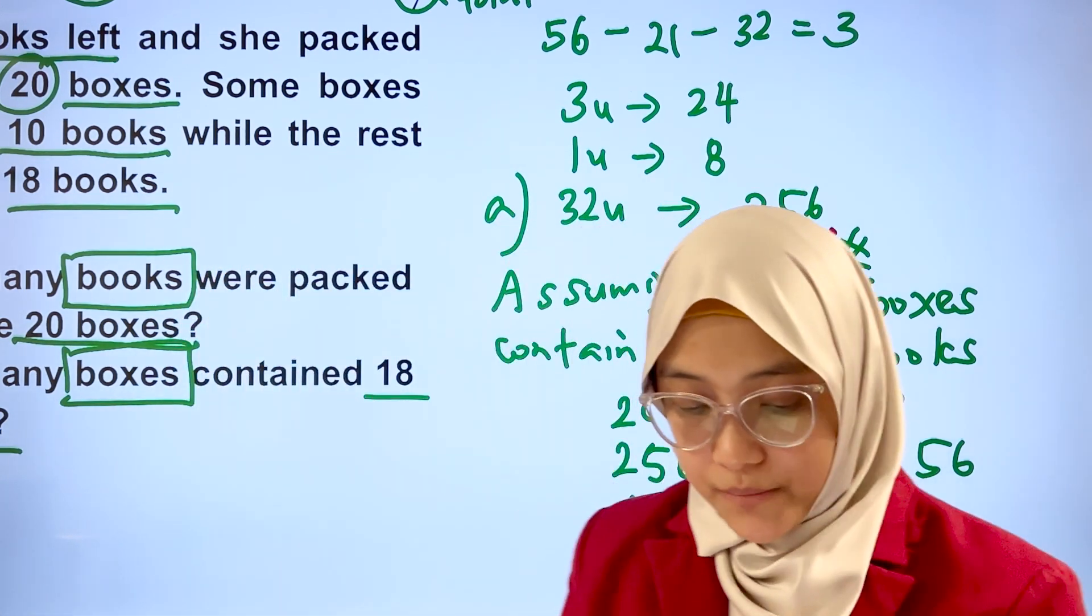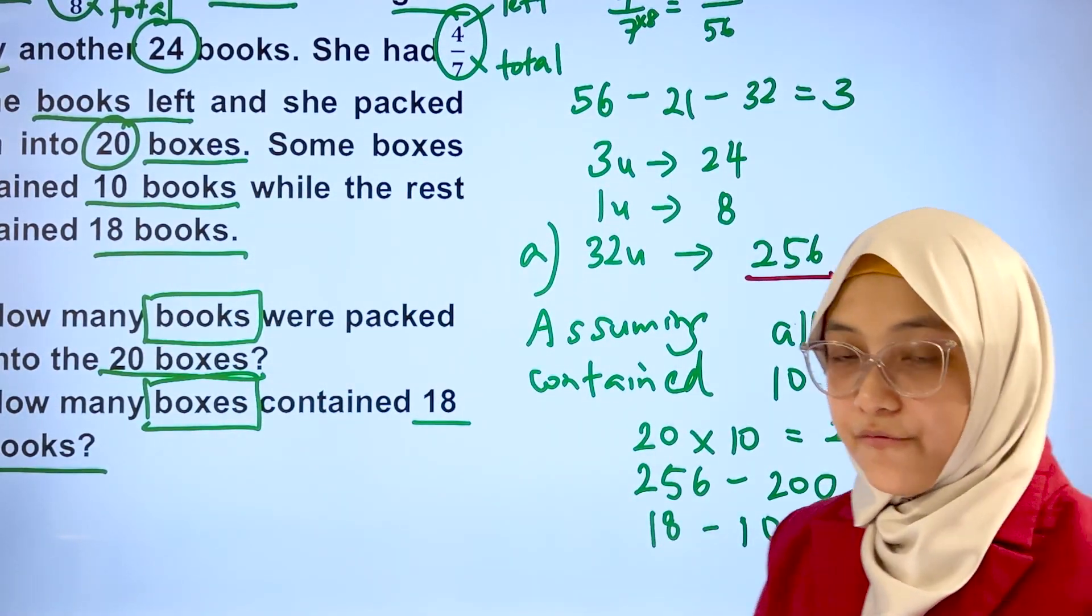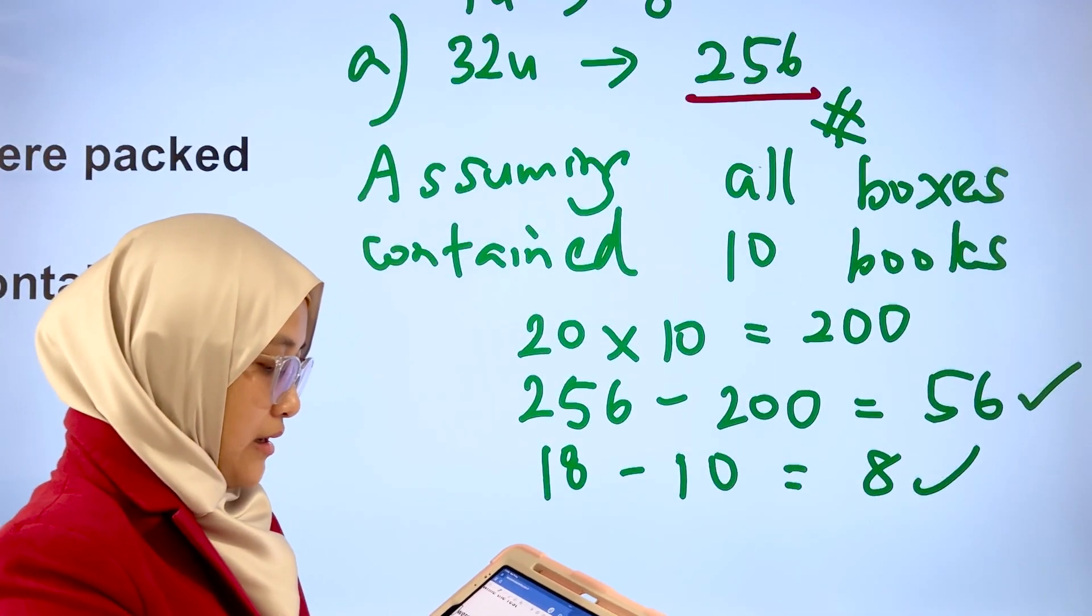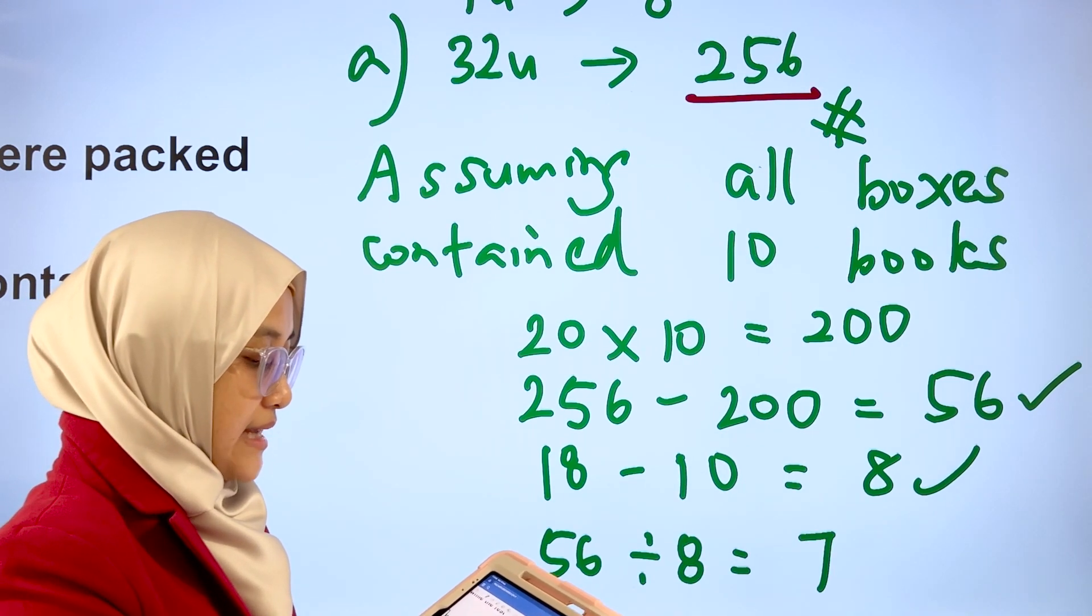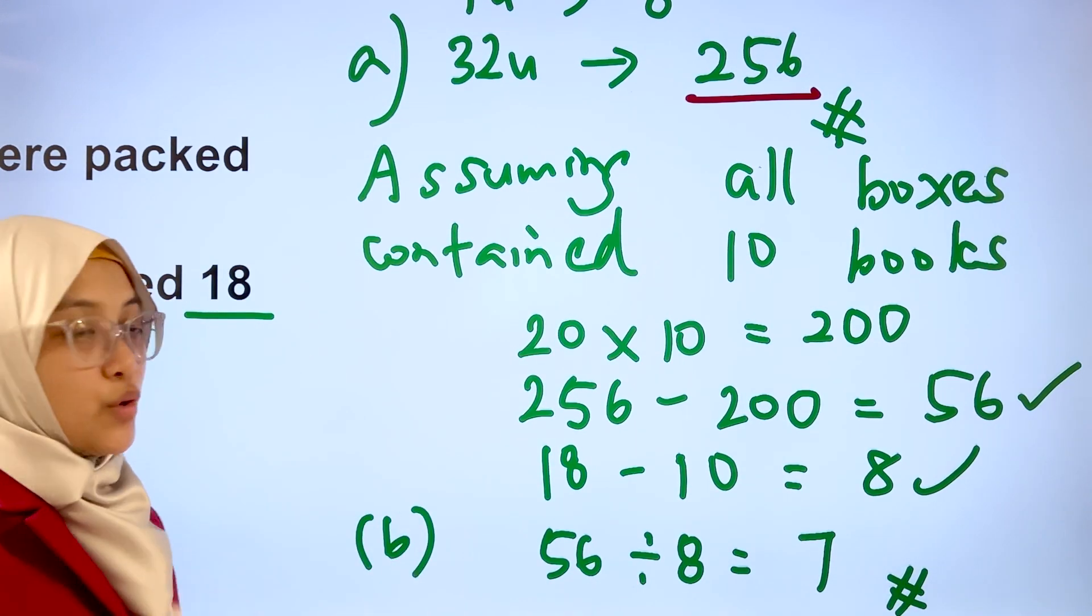Therefore, how many boxes contained 18 books? Divide 56 by 8. 56 divide by 8, that gives us 7 boxes. Contained 18 books.